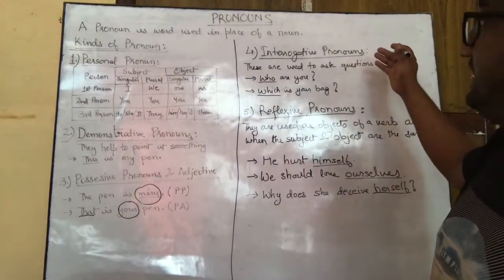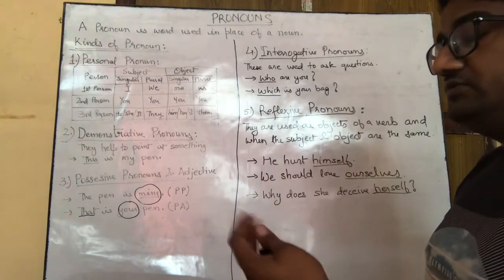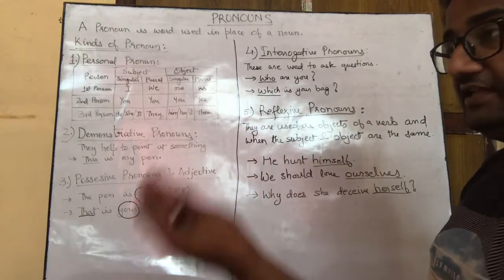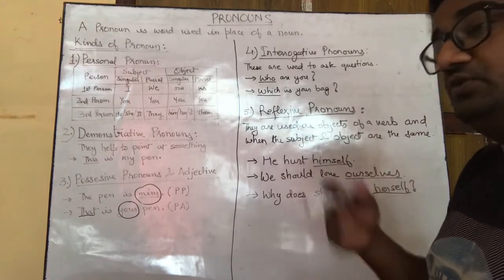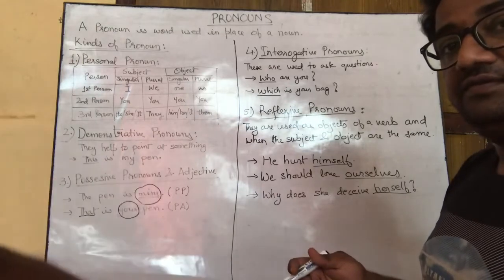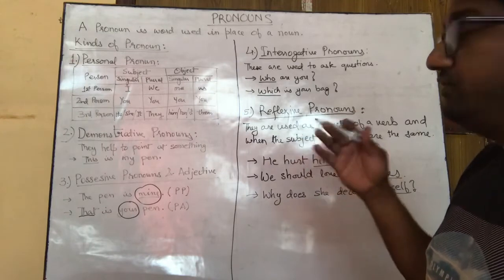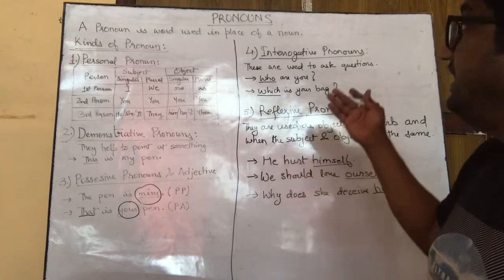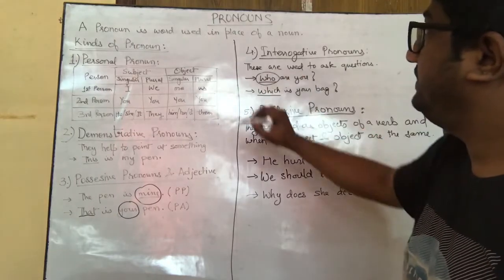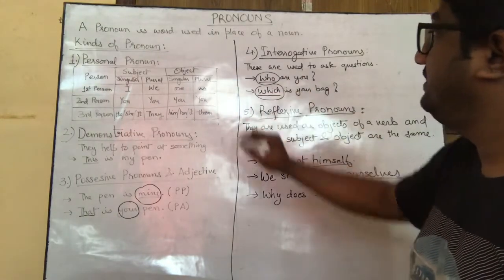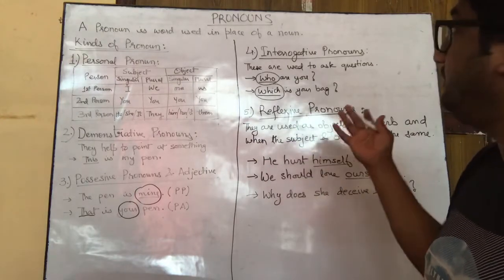Next we will see what is an interrogative pronoun. Interrogative pronouns are used to ask a particular question — they are used to get certain information. Interrogative pronouns are words like who, which, whose, etc. For example: 'Who are you?' — 'who' is the interrogative pronoun. 'Which is your pen?' — 'which' is the interrogative pronoun. 'What are you doing here?' — 'what' is also an interrogative pronoun.